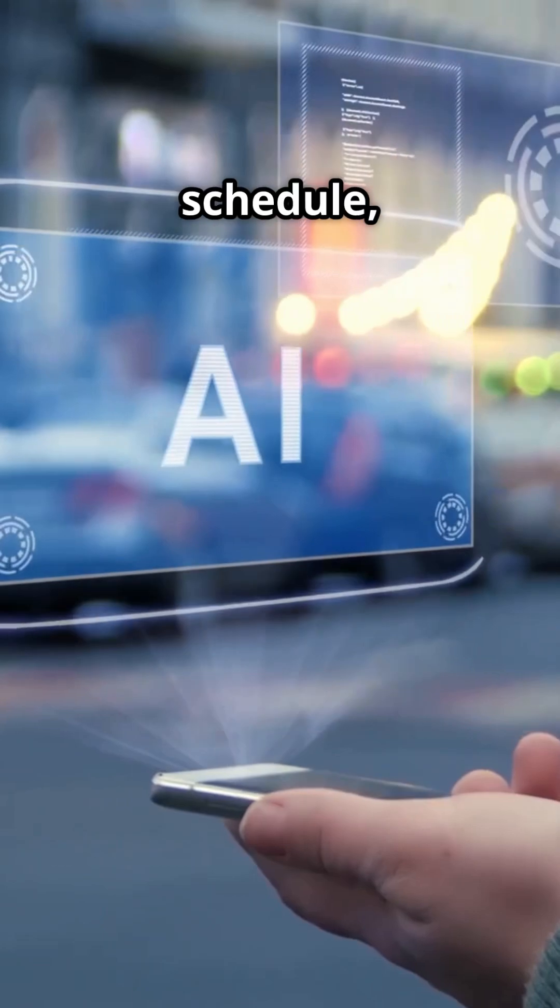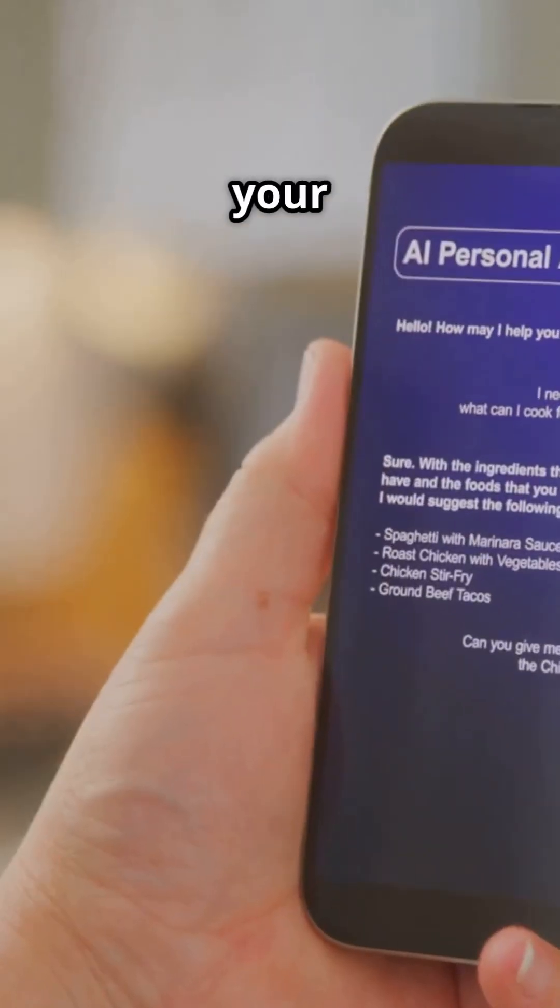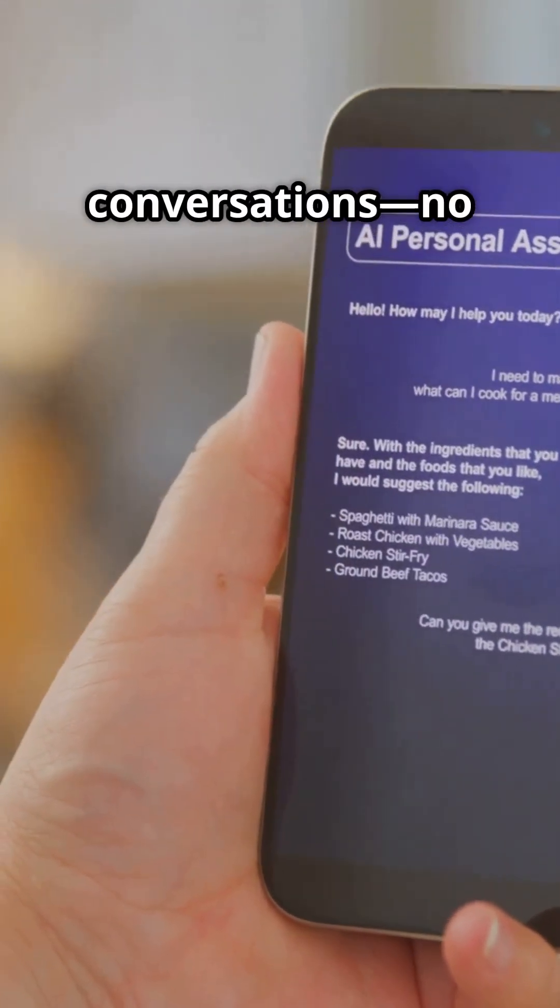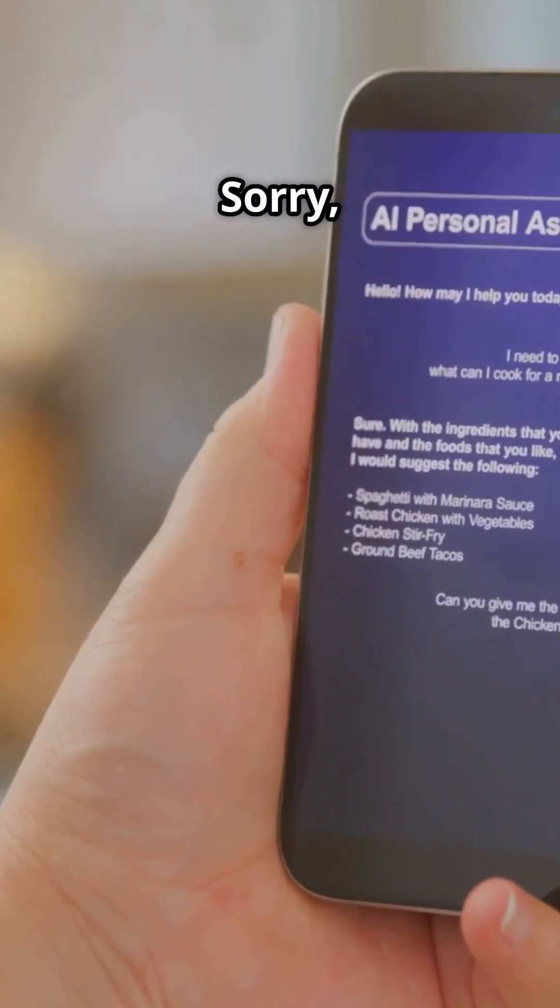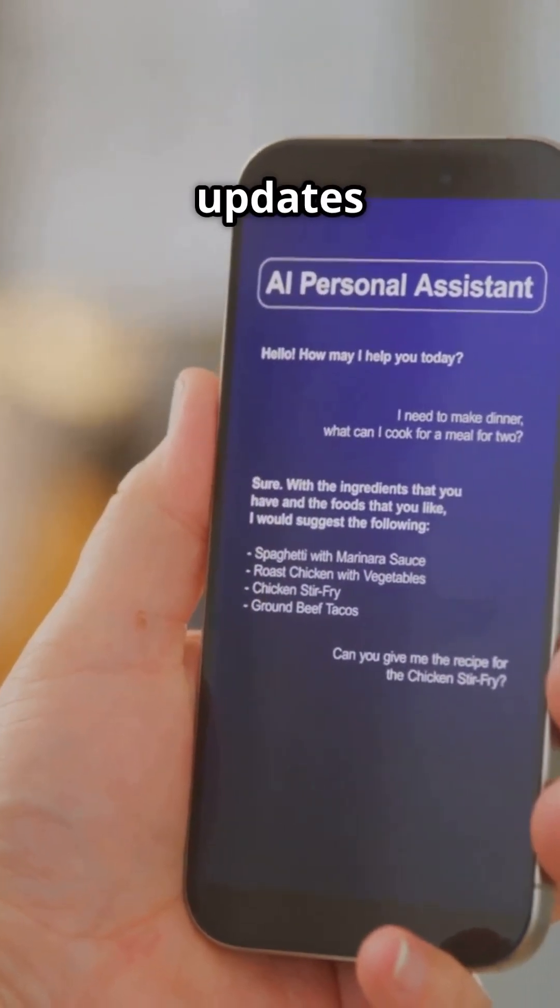It will help you manage your schedule, suggest healthy habits, and even offer emotional support when you're feeling down. It learns your habits, anticipates your needs, and can even hold full conversations. No more awkward 'Sorry, I didn't get that.' Your phone will know when you're running late and automatically send updates to your company.